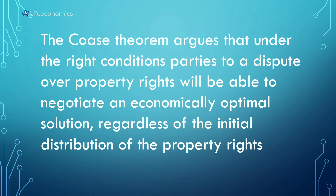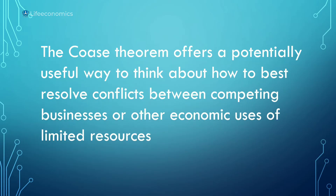The key point is that the initial distribution of property rights should enable parties to negotiate the best outcome. The Coase Theorem offers a potentially useful way to think about how to best resolve conflicts between the polluter and the victim, and between competing businesses and other economic uses of limited resources. This relates to bargaining power and the optimum decision.